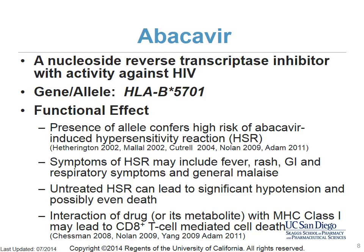The allele HLA-B*5701 confers a high risk of abacavir-induced HSR. Symptoms of HSR may include fever, rash, GI and respiratory symptoms, and general malaise. Untreated HSR can lead to significant hypotension and possibly even death. These symptoms may occur due to the interaction of abacavir or its metabolite with MHC class I, leading to CD8-positive T cell-mediated cell death.